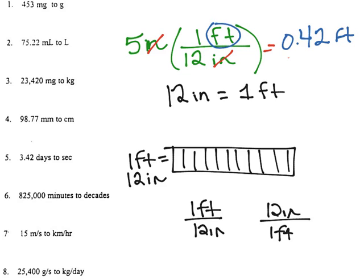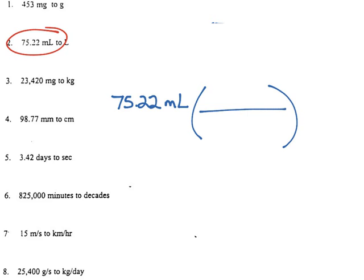So let's take a look at some of these conversions that we have here. So let's just take a look at this one. I'm always going to start by writing the number that I'm given with the unit I'm given, 75.22 milliliters. And I want to convert that into liters. So I need to multiply by a conversion factor.